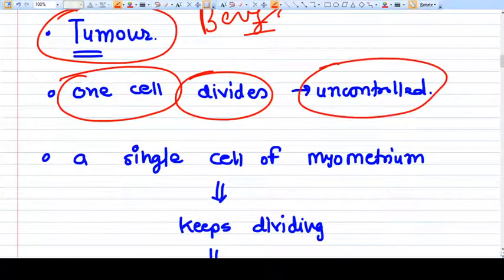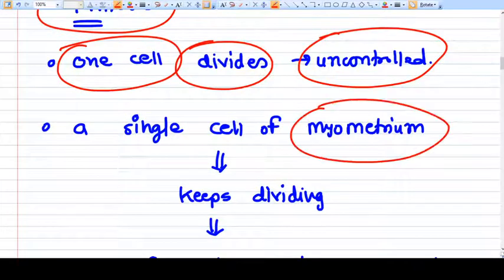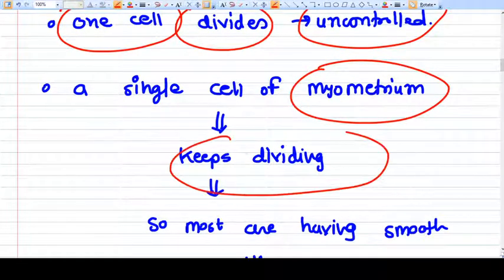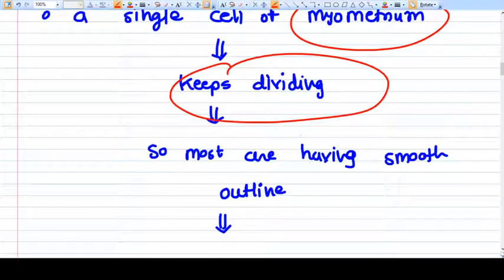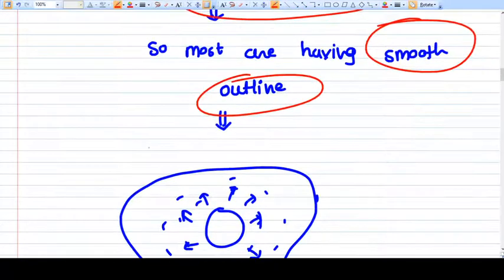Myoma is also like that. A single cell of myometrium becomes uncontrollable, keeps dividing and dividing, and that's why it becomes a fibroid. That's why most fibroids have smooth outlines.